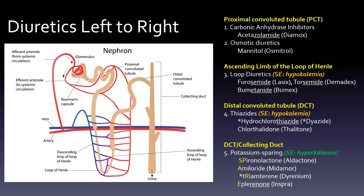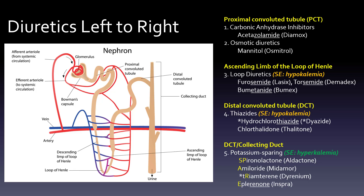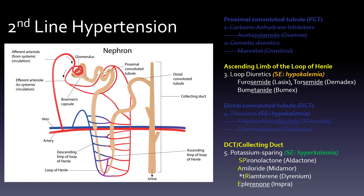Diuretics — we take some of them away. The PCT ones are for emergency conditions. We focus first on the thiazides, which are first line, and then talk a little about loop and potassium-sparing, which are second line. First line — you cross everything else off. The distal convoluted tubule with the thiazides, especially hydrochlorothiazide, is really first line for hypertension. We'll probably combine this with triamterene as the form of dyazide so that the hypo- and hyperkalemia balance out. Then the potassium-sparing diuretics — spironolactone, amiloride, triamterene, eplerenone — and loop diuretics furosemide, torsemide, bumetanide are definitely not first line for hypertension.